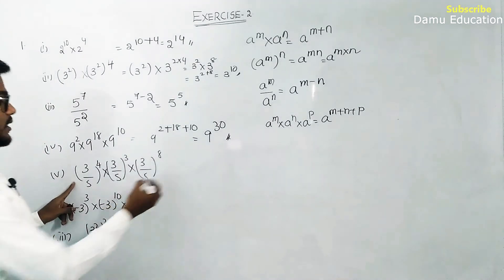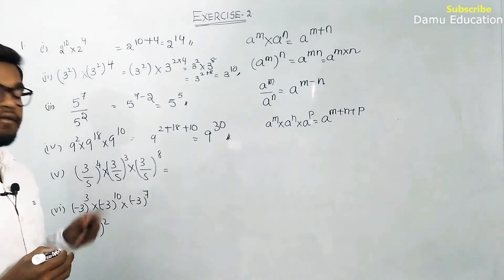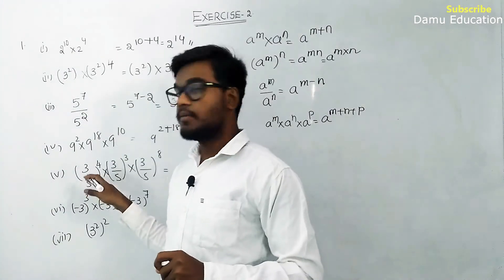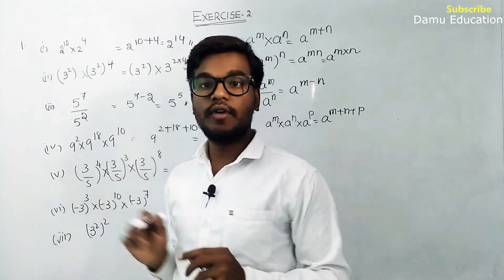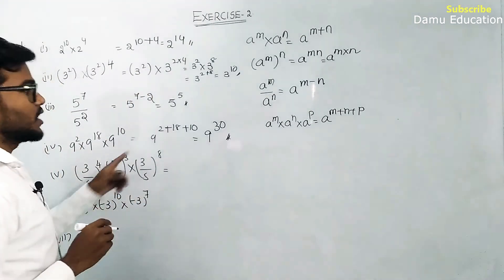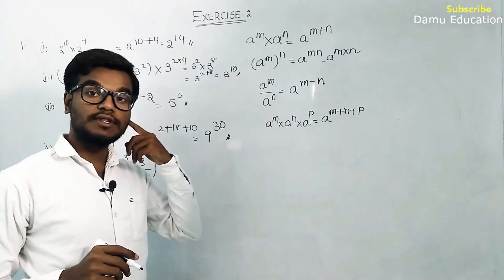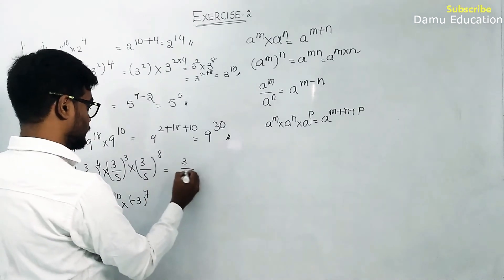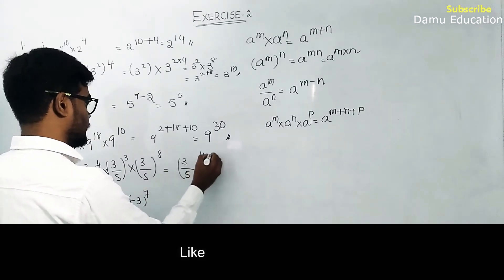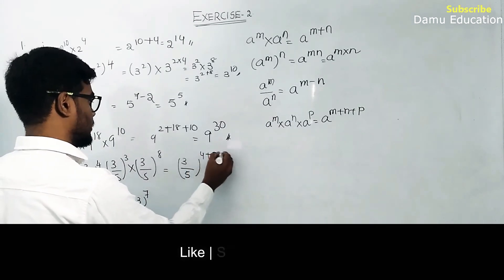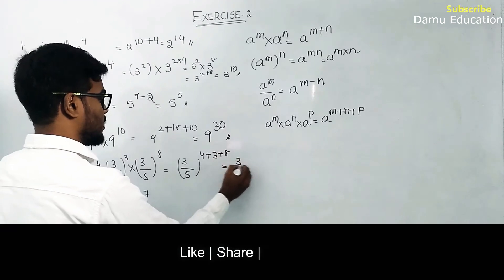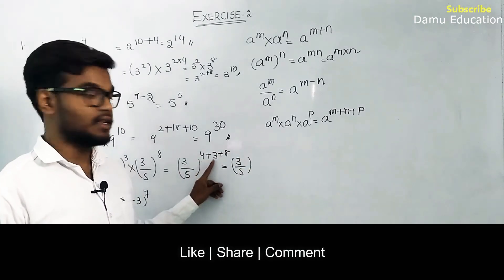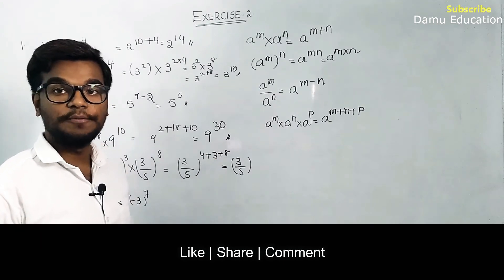Next: all bases are 3 by 5. Using a power m into a power n into a power p equals a power m plus n plus p. So 3 by 5 whole power 4 plus 3 plus 8: 4 plus 3 is 7, 7 plus 8 is 15. Answer is (3/5) power 15.